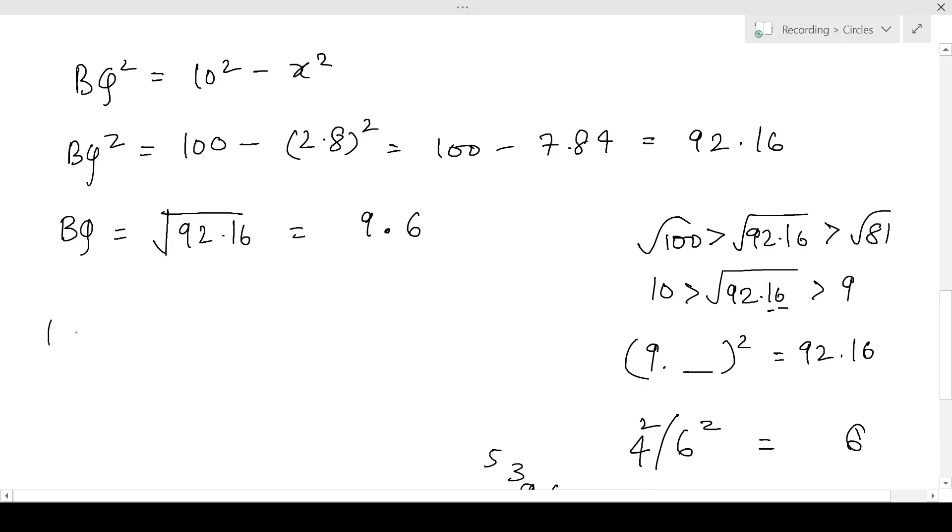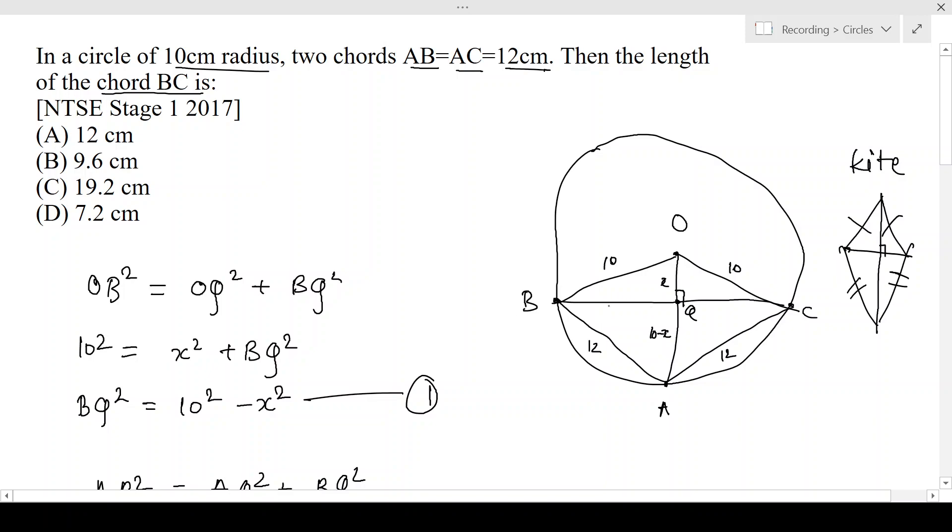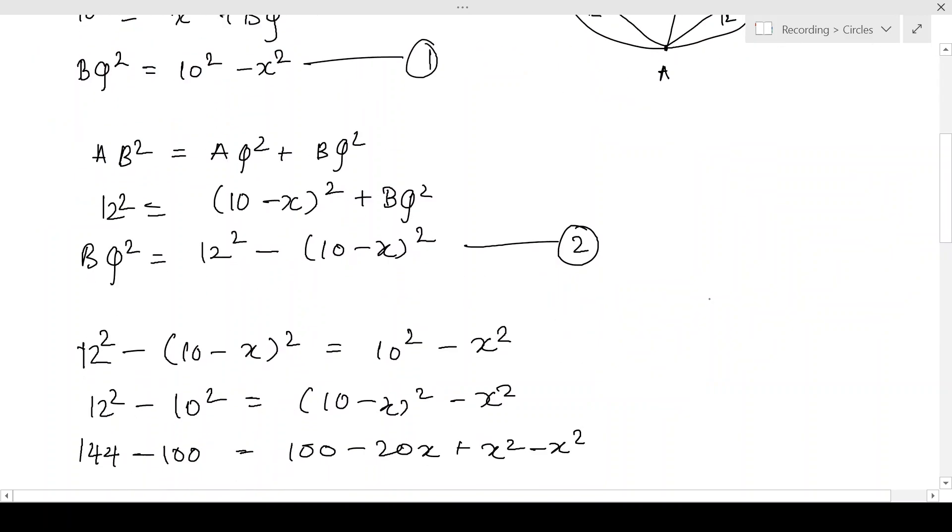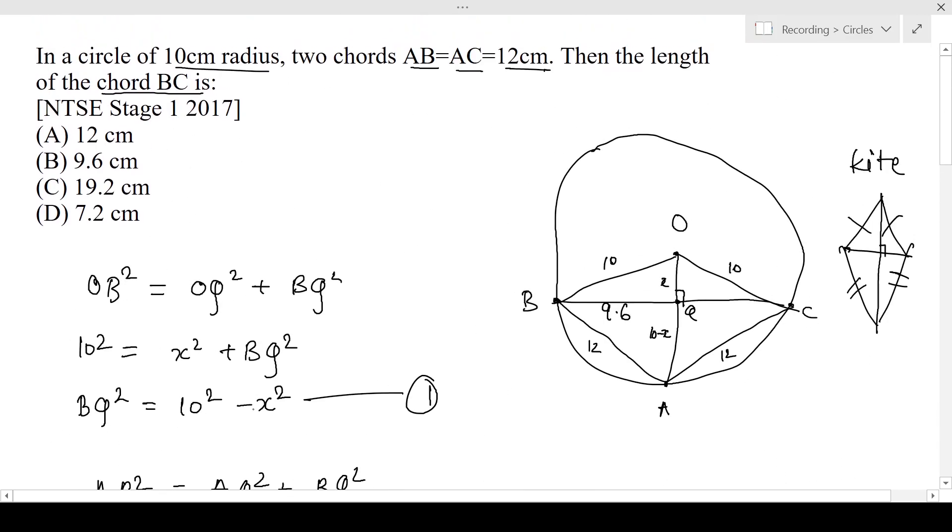So that gives us BQ is equal to 9.6. Let's go back at the diagram. BQ is 9.6 and BQ is equal to QC from the diagram we can understand that. So BC is equal to 2BQ that is equal to 2 multiplied by 9.6 that is equal to 19.2. And that's your answer, option number C, 19.2.